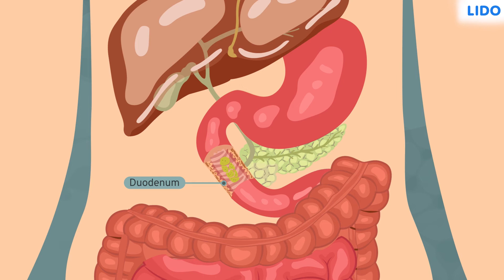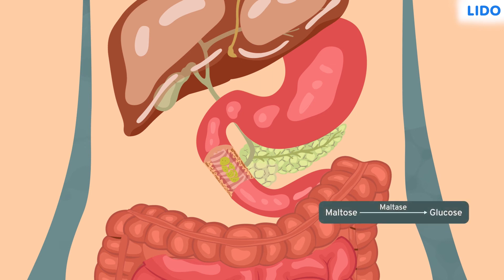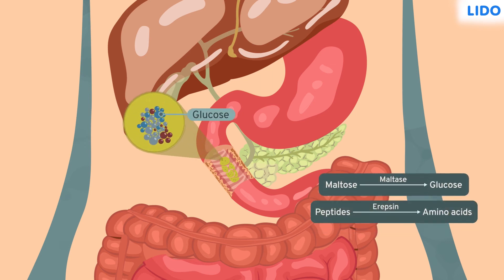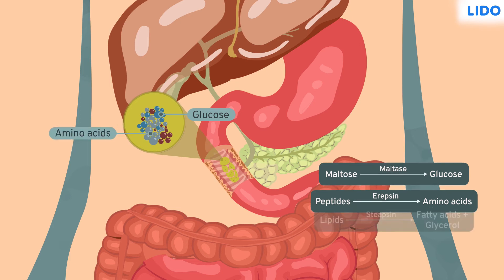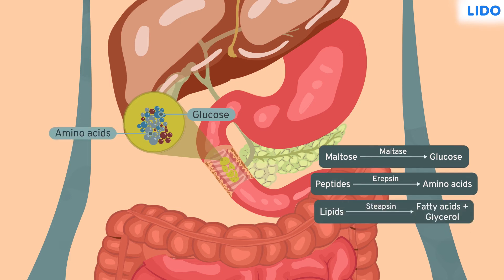The final breakdown of food occurs in the duodenum region of the small intestine by three enzymes released by the small intestine. Enzyme maltase breaks down all the maltose to glucose molecules. Erepsin breaks down all the peptides to amino acids. And lipase enzyme breaks down the remaining lipids to fatty acids and glycerol.